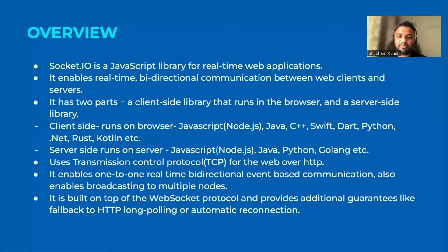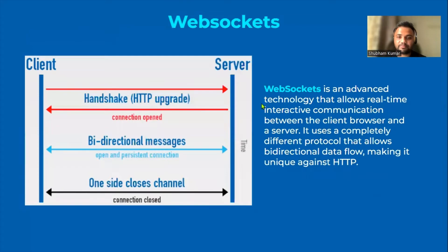Sockets enable one-to-one real-time bi-directional event-based communication and also enable broadcasting to multiple nodes — that means broadcasting a message to a single user or to multiple users. As you can see in the image, we have a client and a server: the client sends a connection request, the server authenticates it, and after successful authentication a connection is opened. Now both client and server can communicate bi-directionally, and either side can close the connection.